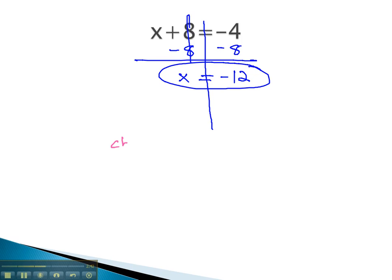We can always check to make sure our solution is the correct solution by taking our negative 12 and plugging it in for x, to see if it's really what makes the equation true. So, x is negative 12 plus 8 should equal negative 4. Well, the negative is bigger, and 12 minus 8 is 4. Sure enough, we get negative 4 on both sides. It checks, which tells us our answer is the correct answer.